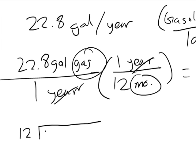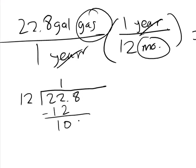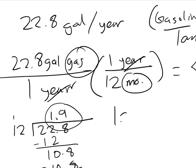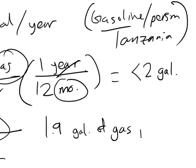So we could go 12, 22.8 divided by 12. We know that, well, 2 times 12 would be 24, which is too big. So 1 times 12 is 12. We're left with 10.8. And then if I go 9 times 12, I end up with 9 times 2 is 18. Carry the 1. 9 times 1 is 9, plus 1 is 10.8. So the ending value is 1.9. And you need to tell me what the units were, gallons of gas per month for a person in Tanzania.